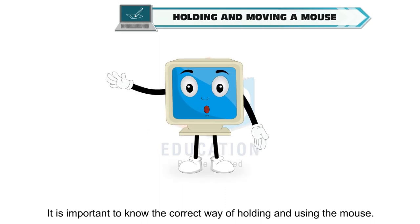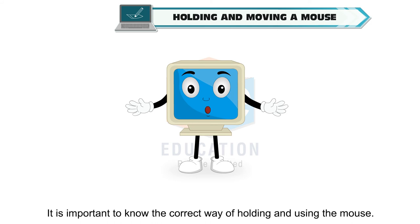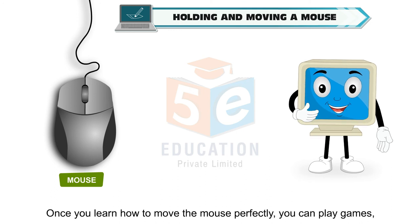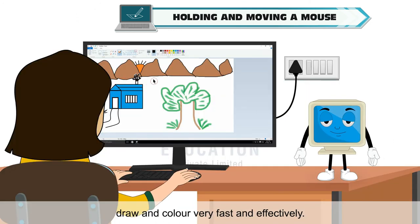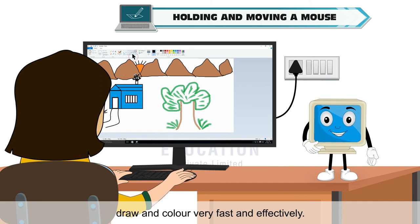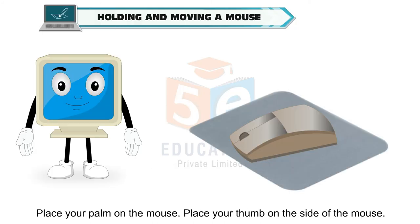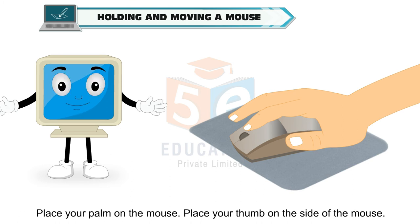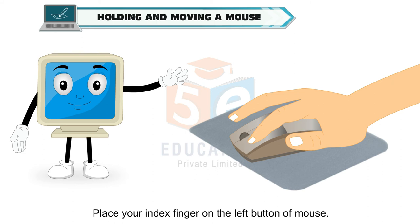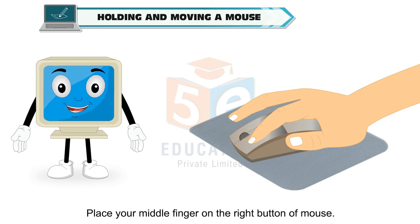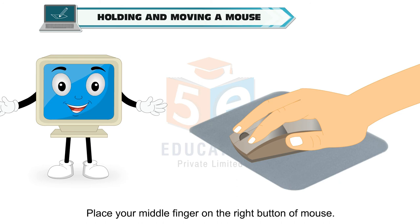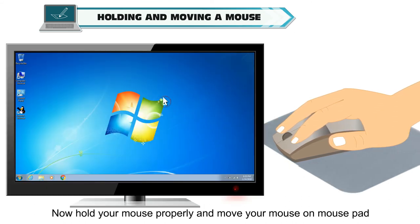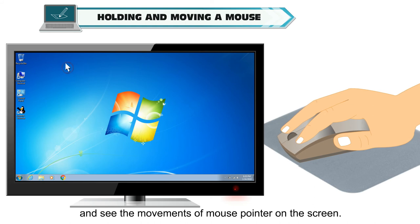It is important to know the correct way of holding and using the mouse. You should practice these steps. Once you learn how to move the mouse perfectly, you can play games, draw and colour very fast and effectively. Place your palm on the mouse, place your thumb on the side, your index finger on the left button, and your middle finger on the right button. Now hold your mouse properly and move it on the mouse pad, and see the movements of the mouse pointer on the screen.